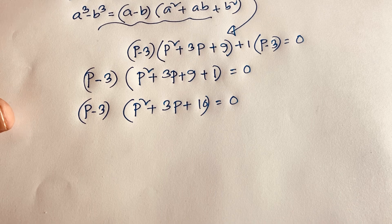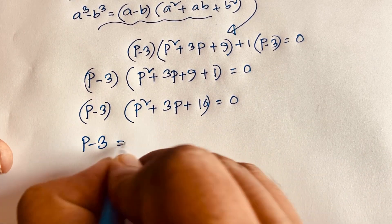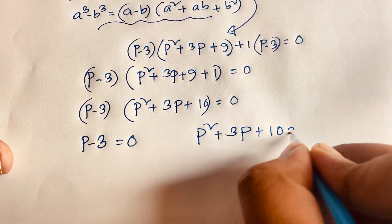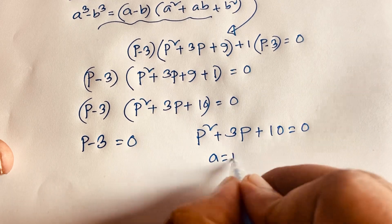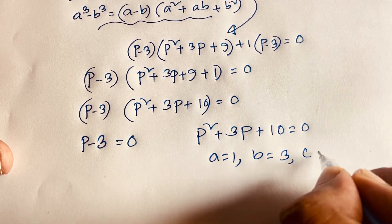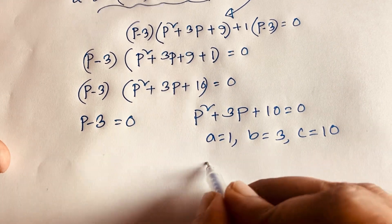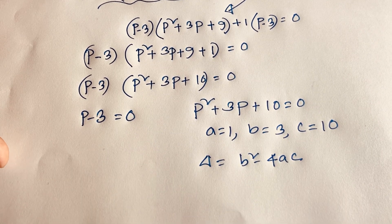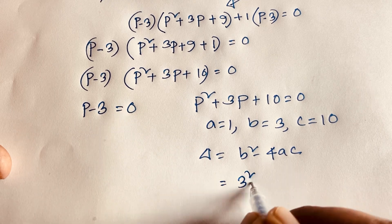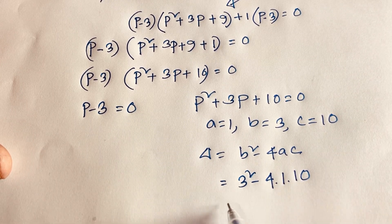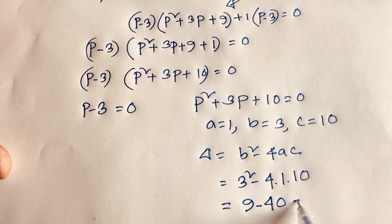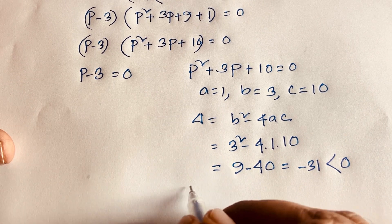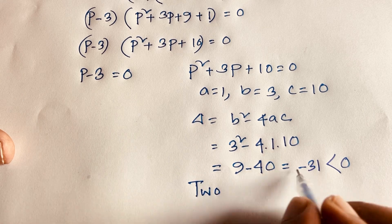We have two cases. Case 1: p − 3 = 0. Case 2: p² + 3p + 10 = 0, where a = 1, b = 3, c = 10. To check if case 2 has real solutions, we evaluate the discriminant b² − 4ac = 3² − 4(1)(10) = 9 − 40 = −31. Since −31 < 0, we get two complex solutions.